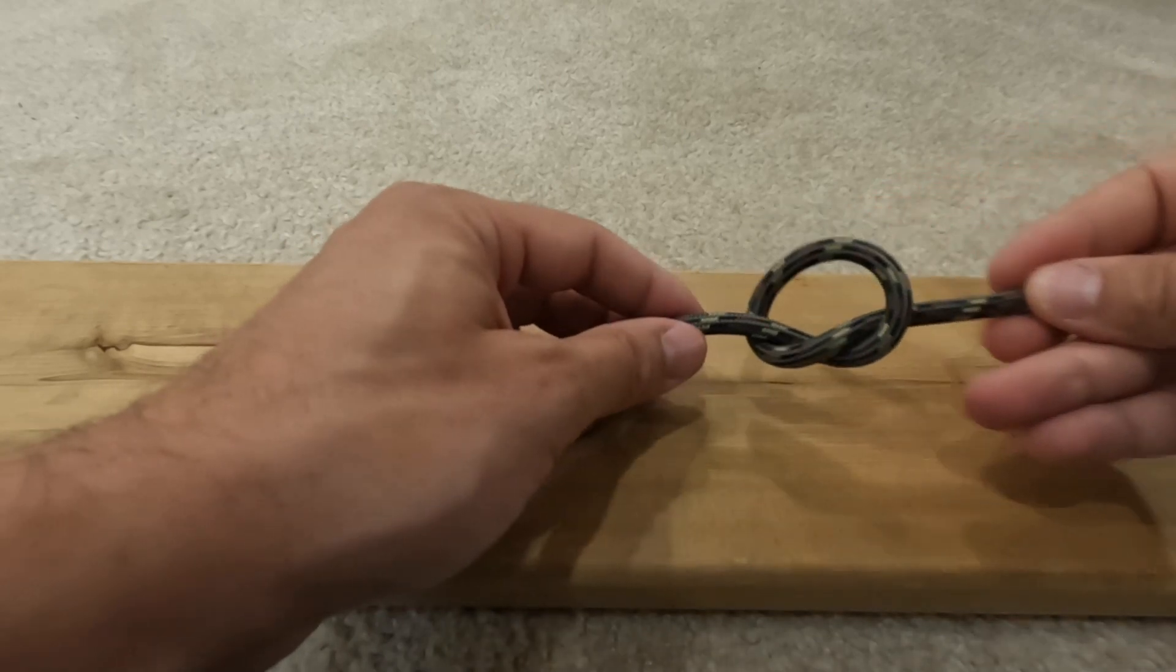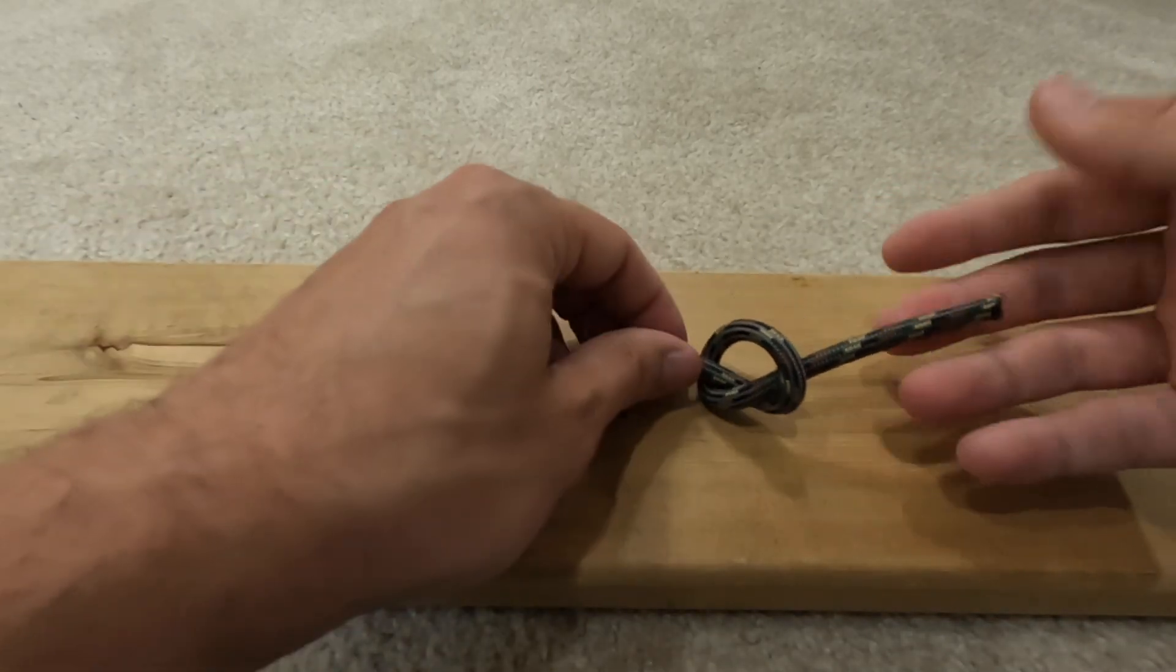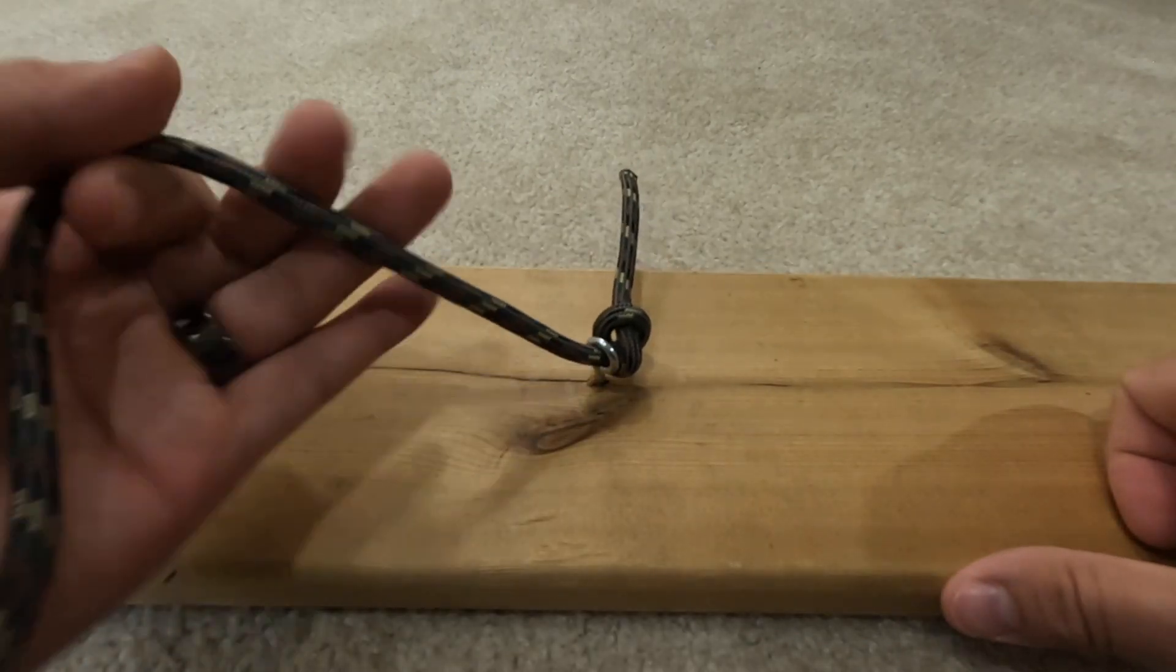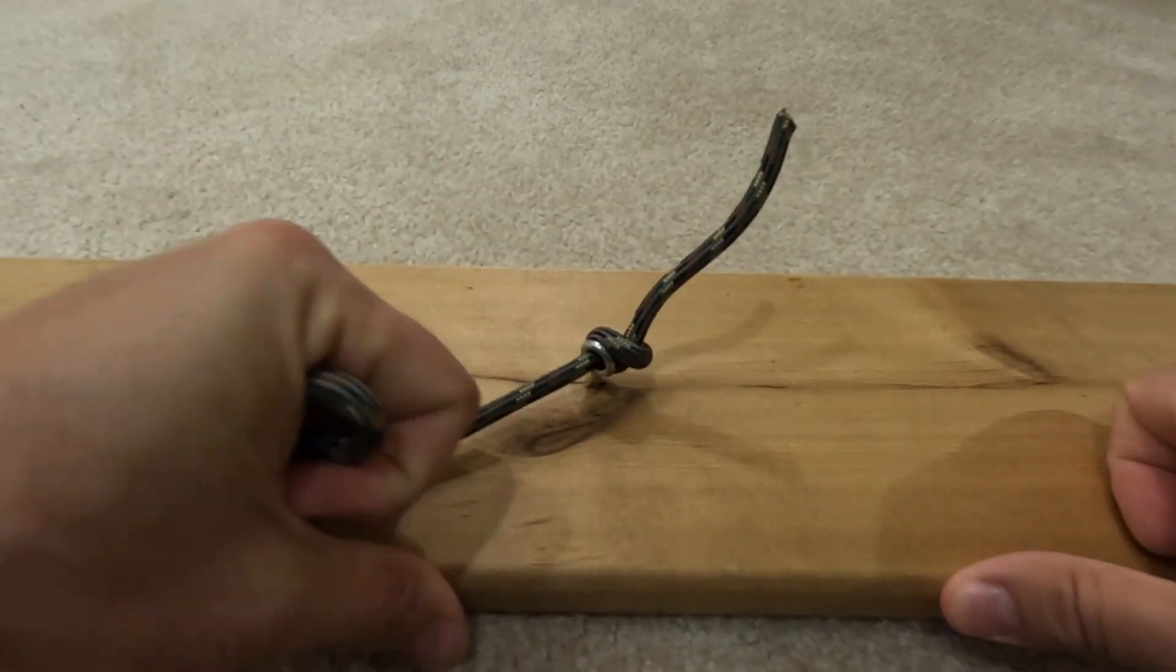If you have two objects close together that you can fit a line through, you can tie a stopper knot to secure the line by preventing it from slipping through a hole or something like a carabiner for rock climbing uses.